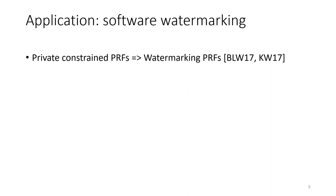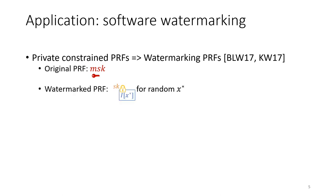Boneh, Lewi, Wu and Kim-Wu showed how to use private constrained PRFs to build PRFs that can be watermarked. In their construction, we have a PRF which is a private constrained PRF and we want to put a mark on it. The watermarked version of this PRF is a private constrained key corresponding to the point function predicate with a random point x*.